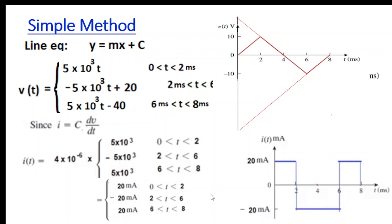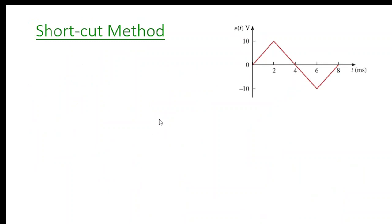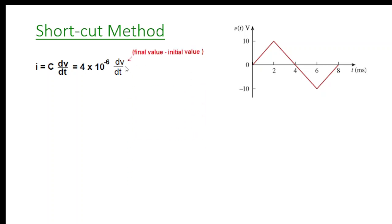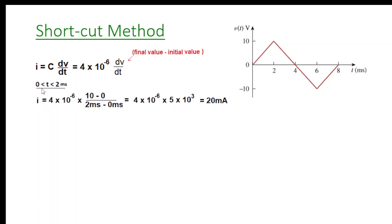The best method — from the solution manual — is to find the current directly from the diagram using i = C · dV/dt. C = 4×10⁻⁶, and dV/dt is simply the change in voltage divided by the change in time. For 0 to 2ms: dV = 10 - 0 = 10, dt = 2ms - 0. Solving gives 20 milliamps.